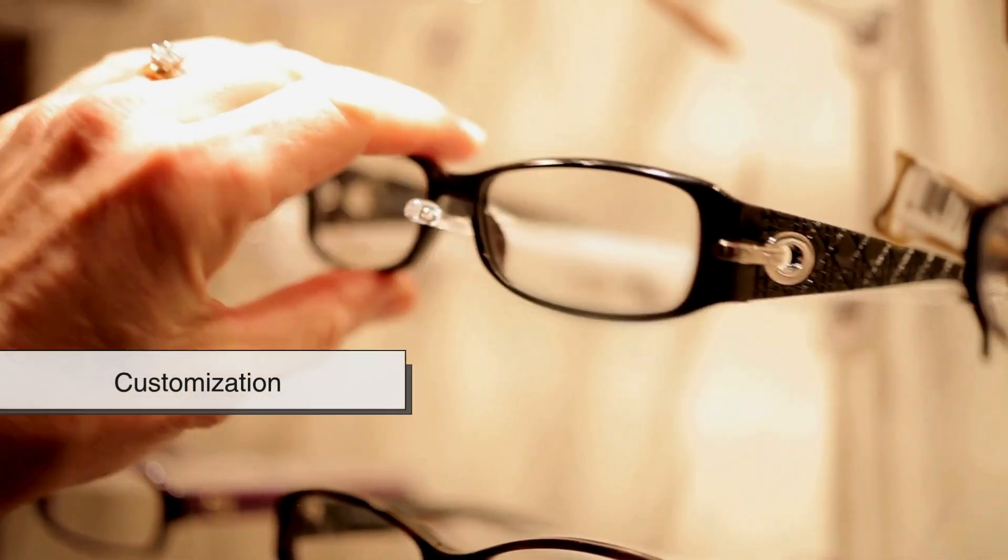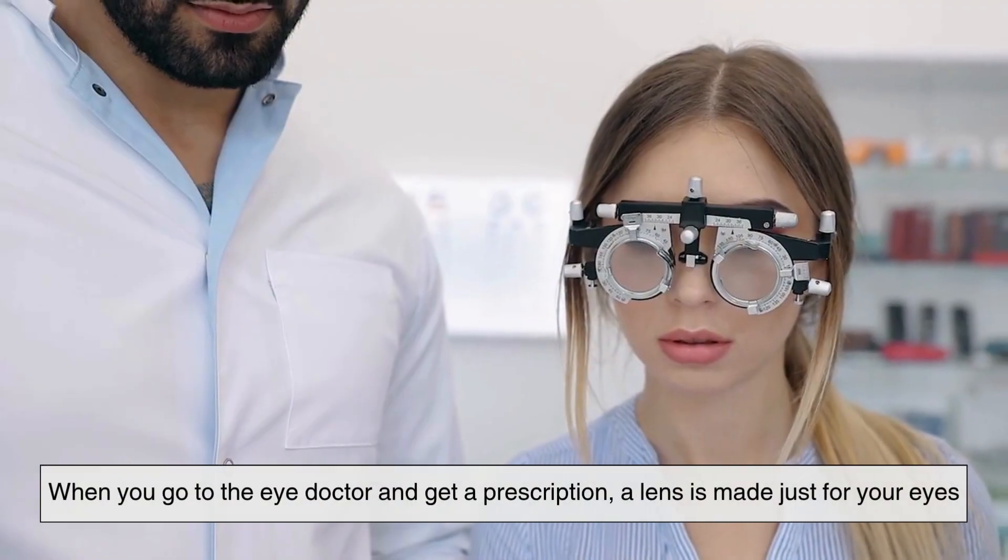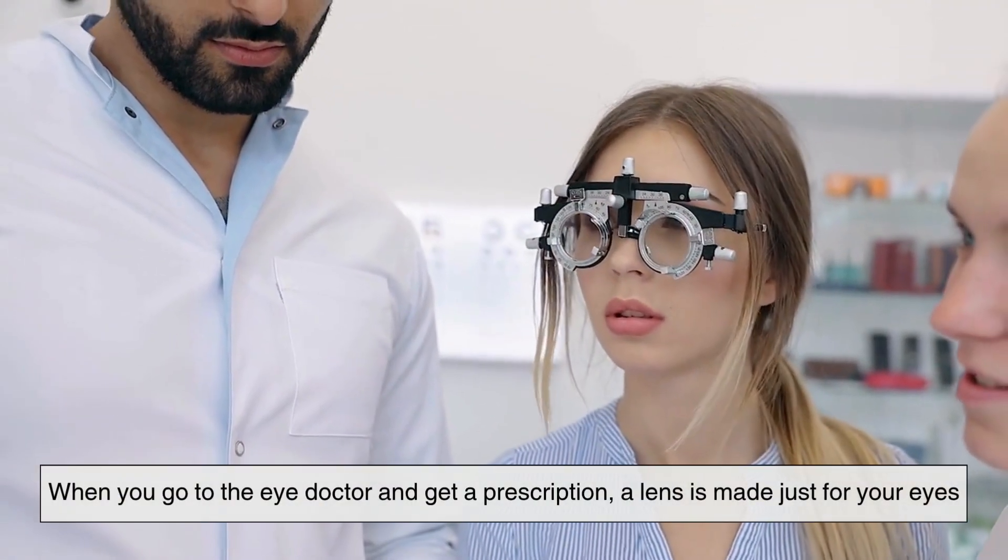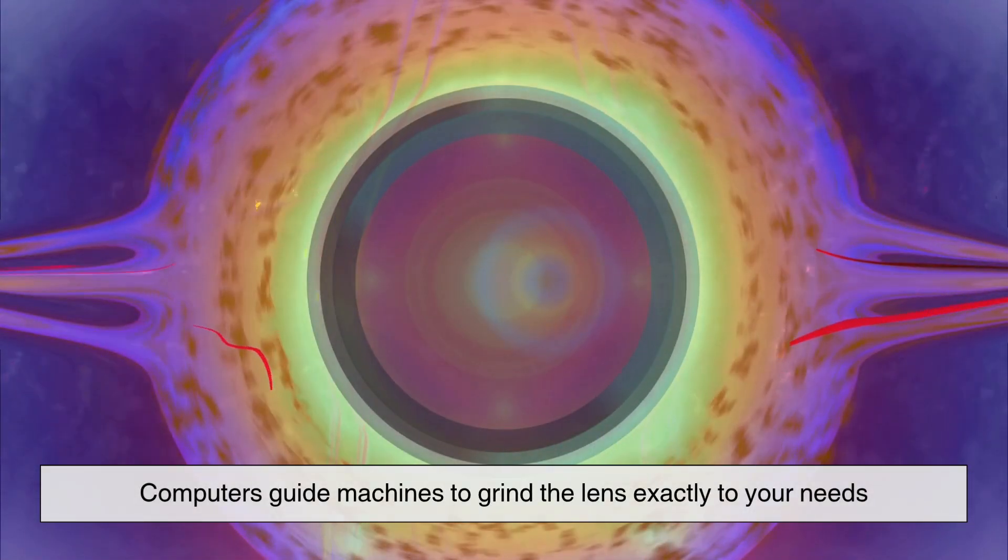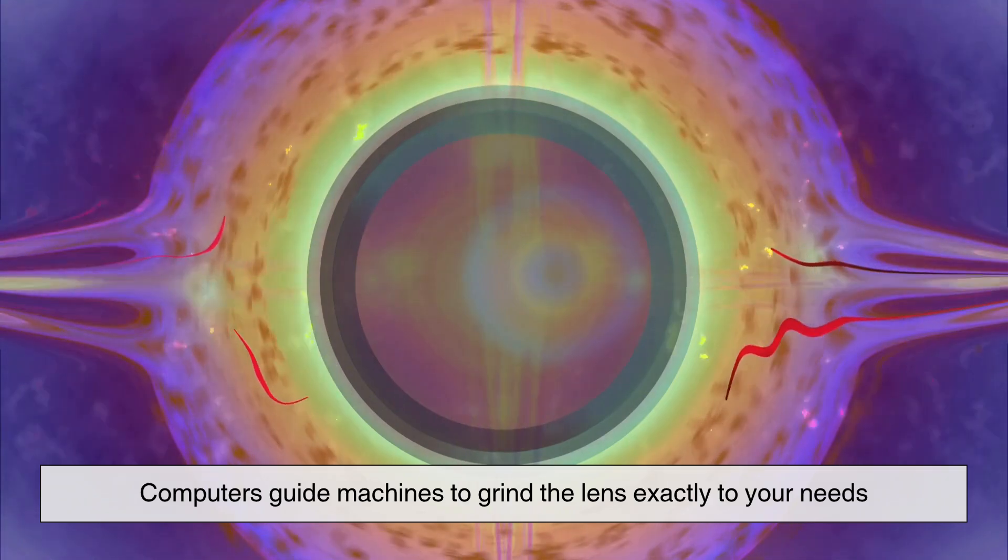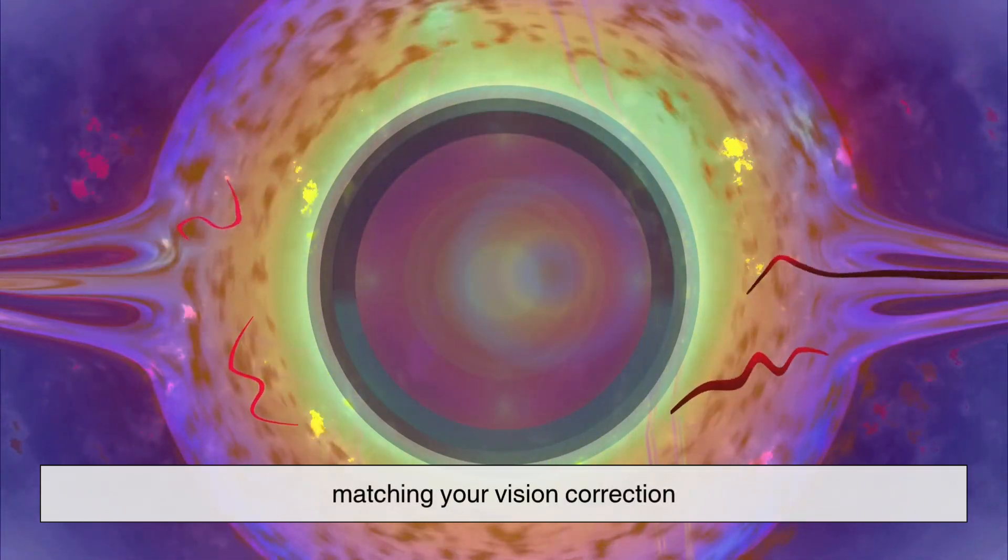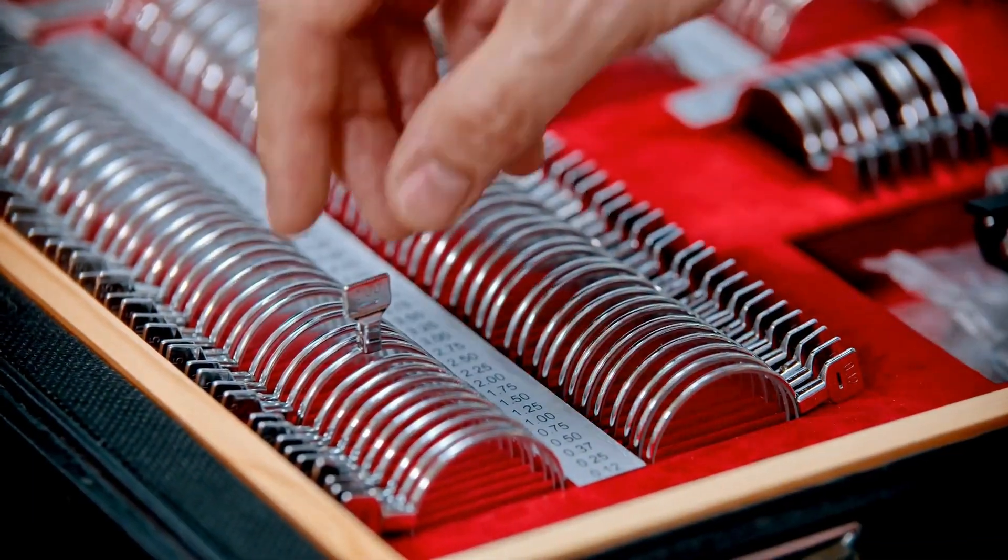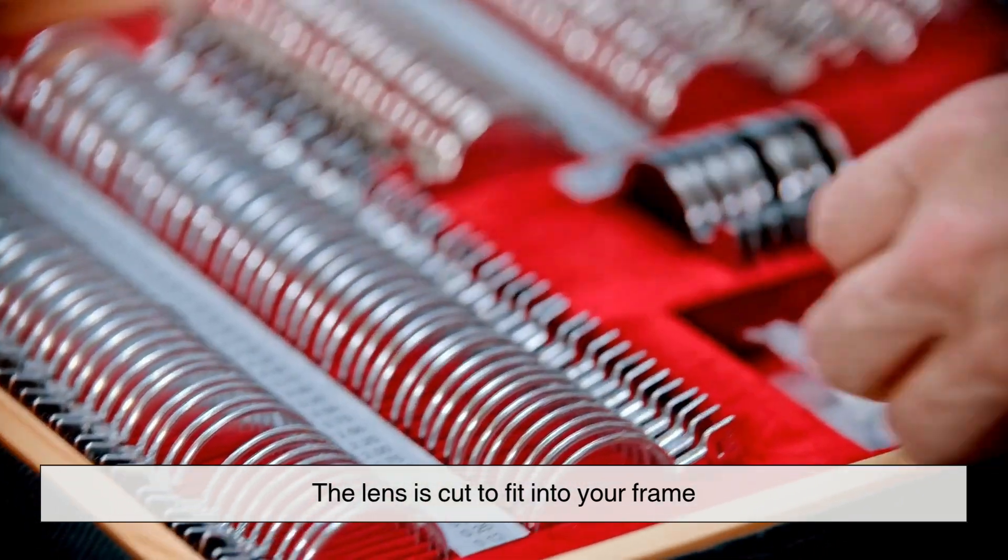For eyeglasses, there's an extra step: customization. When you go to the eye doctor and get a prescription, a lens is made just for your eyes. Computers guide machines to grind the lens exactly to your needs, matching your vision correction. After that, the lens is cut to fit into your frame.